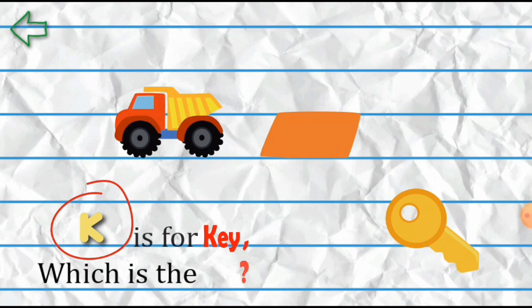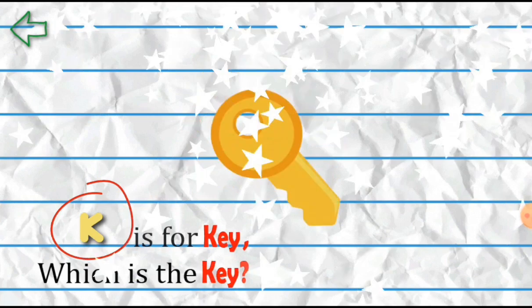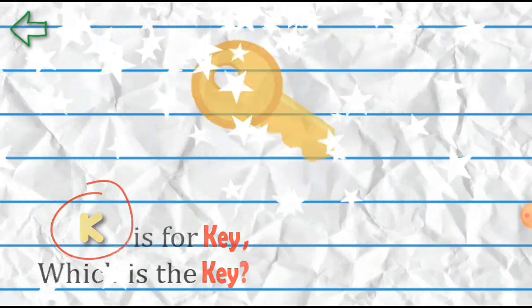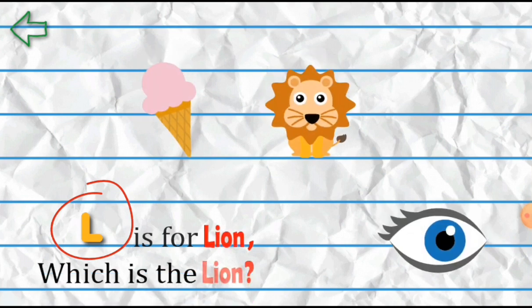K is for Key. Which is that? Key. L is for Lion. Which is that? Lion.